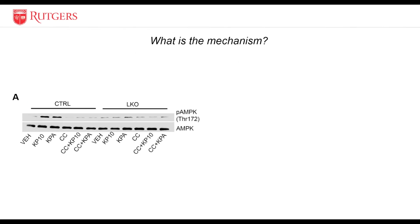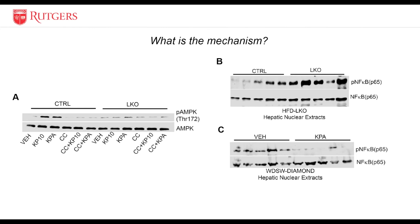Mechanistically, we observed that kispeptin stimulated phosphorylation of AMPK in primary hepatocytes. This phosphorylation was effectively blocked by selective AMPK inhibitor compound C. However, no change in phosphorylation of AMPK was observed in hepatocytes isolated from our knockout mice. Hepatic AMPK activation inhibits inflammation by attenuating pro-inflammatory signaling such as NF-κB-mediated pathways. We observed that high-fat diet-fed knockout mouse livers displayed increased hepatic NF-κB phosphorylation compared to controls, while a significant decrease in NF-κB phosphorylation was seen in kispeptin analog-treated livers in the DIAMOND mouse model.